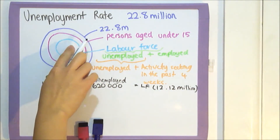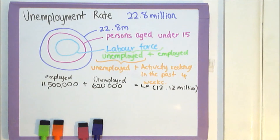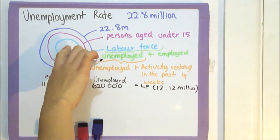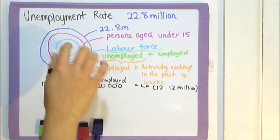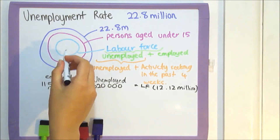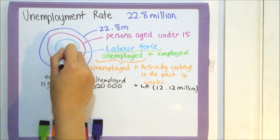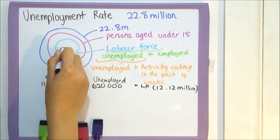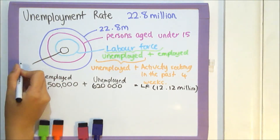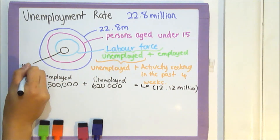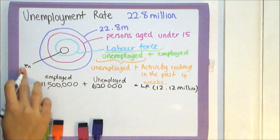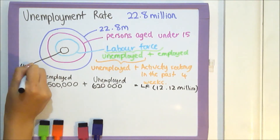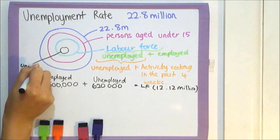This blue circle is the labour force, and within this blue circle there is the employed and the unemployed. Here is a little circle representing the unemployed people — so this is the unemployed.